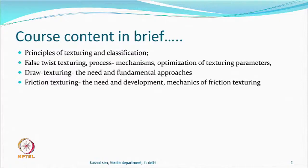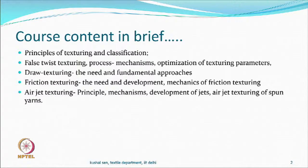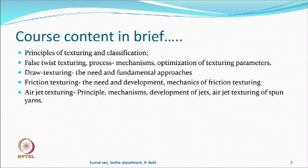There will be property correlation and so on, but mainly we will be talking about friction. Another process which is commercially successful is called air jet texturing, where instead of using thermal inputs, you will have air as a mechanism of deformation and entanglement. You can use this process to produce what we call air jet textured yarns.